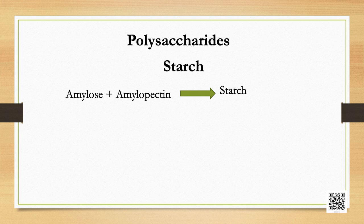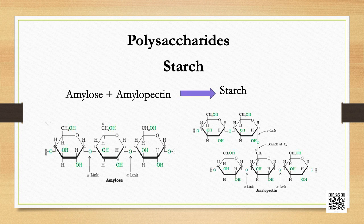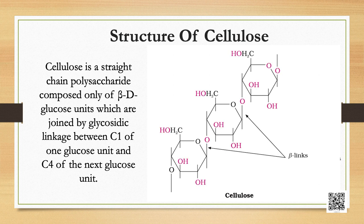Polysaccharides contain a large number of monosaccharide units joined together by glycosidic linkages. Starch is the main storage polysaccharide of plants and is the most important dietary source for human beings. It is a polymer of alpha-glucose and consists of two components: amylose and amylopectin. Amylose is a water-soluble component; it is a long unbranched chain with 200 to 1000 alpha-D(+)-glucose units held together by C1–C4 glycosidic linkages. Amylopectin is insoluble in water, constitutes about 80–85% of starch, and is a branched chain polymer of alpha-D-glucose units in which the chain is formed by C1–C4 glycosidic linkages, whereas branching occurs by C1–C6 glycosidic linkages.